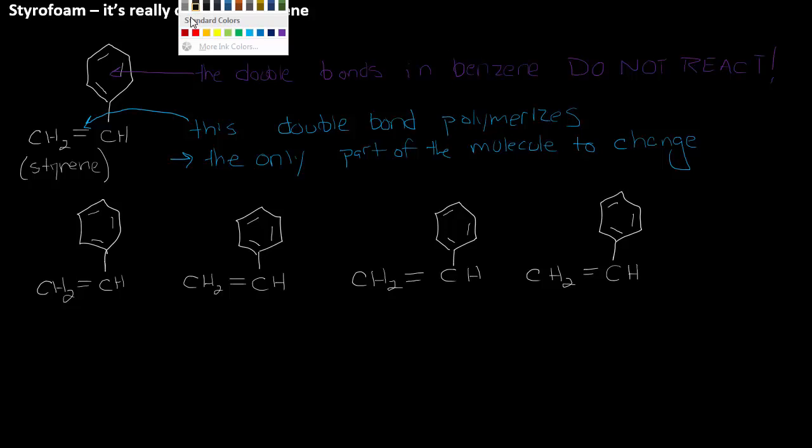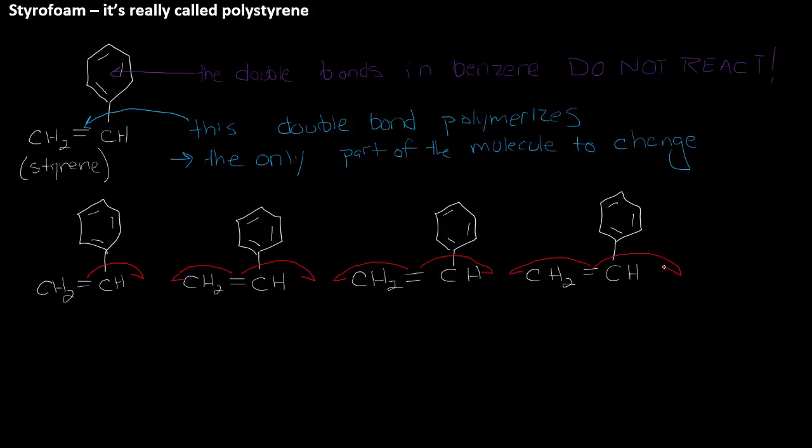Now when the polymerization reaction happens the same as it did for the polyethene, one electron from each styrene molecule essentially goes to the middle towards the next styrene molecule and they'll join to make bonds.